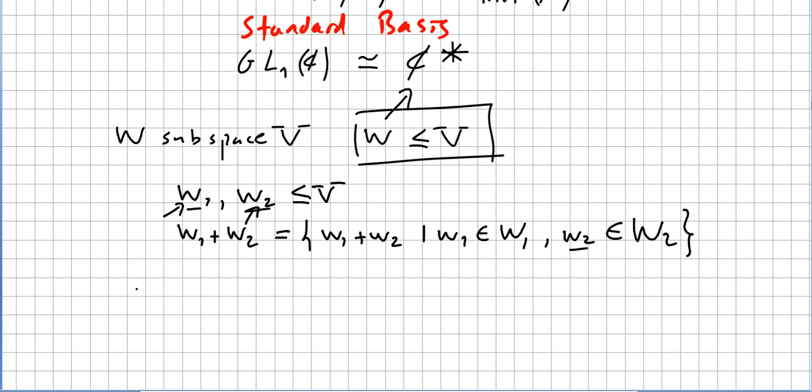Also from linear algebra, if I intersect W_1 with W_2 and I get the set with the element 0, then we say that W_1 + W_2 is a direct sum and we are going to write W_1 ⊕ W_2.